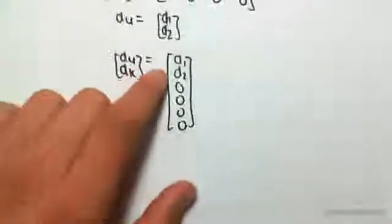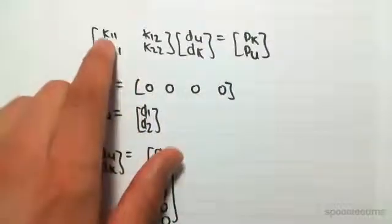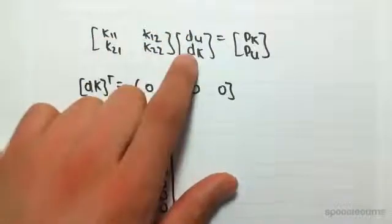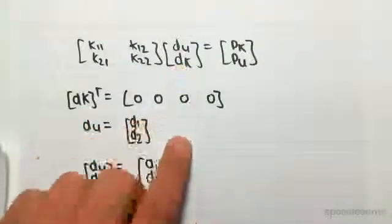It's D1, D2, 0, 0, 0, 0, 0. Now when you multiply these rows by this column, that essentially is 0.